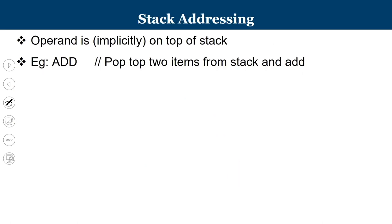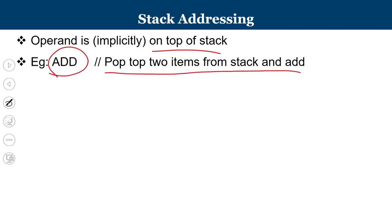In stack addressing mode, for a stack architecture, the operands are always on the top of the stack. When you specify add, it means pop two items from the stack and add them — you are not specifying where the operand is. So it is actually an implied or implicit addressing mode where the value is already on the stack.